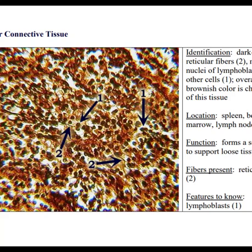Reticular connective tissue forms a scaffolding — I say it looks like fishnet stockings. It has reticular fibers as the predominant type, with some collagen as well. Each of those little brown structures inside is a lymphoblast, so reticular tissue makes up part of your immune system.